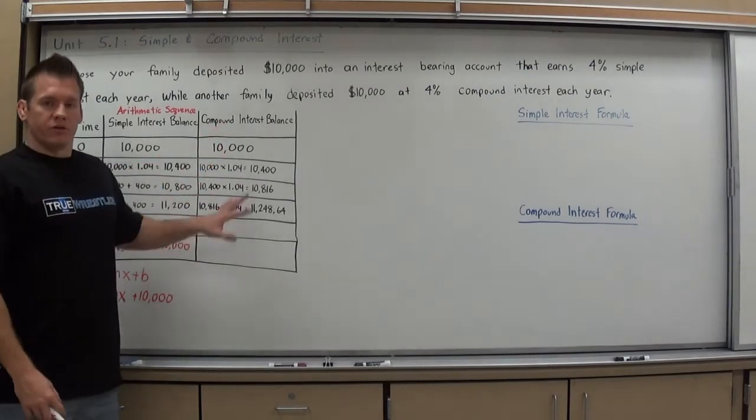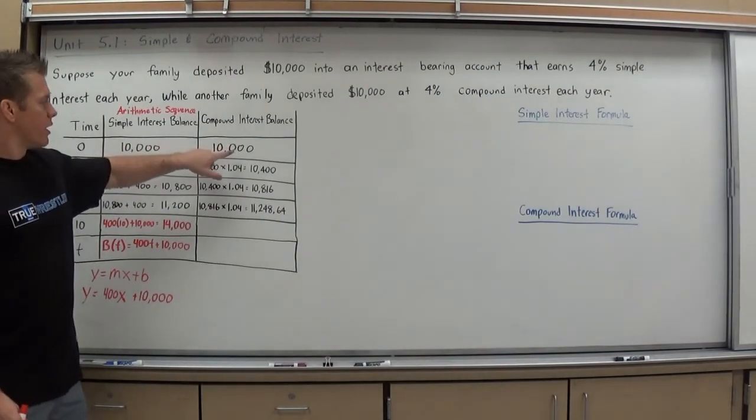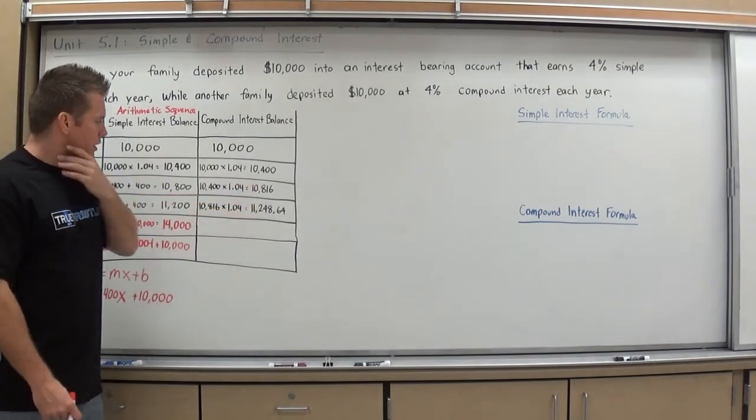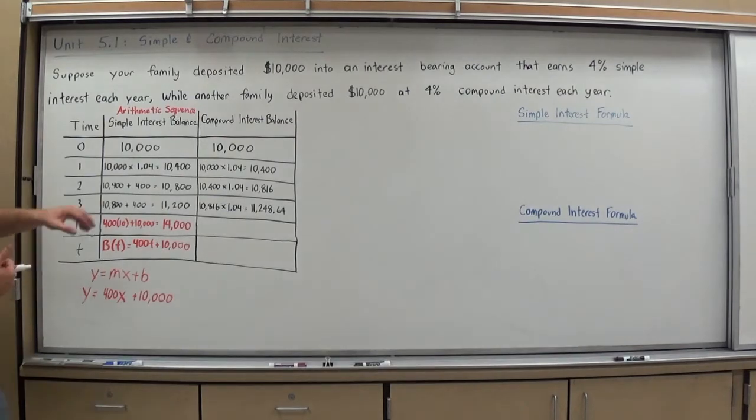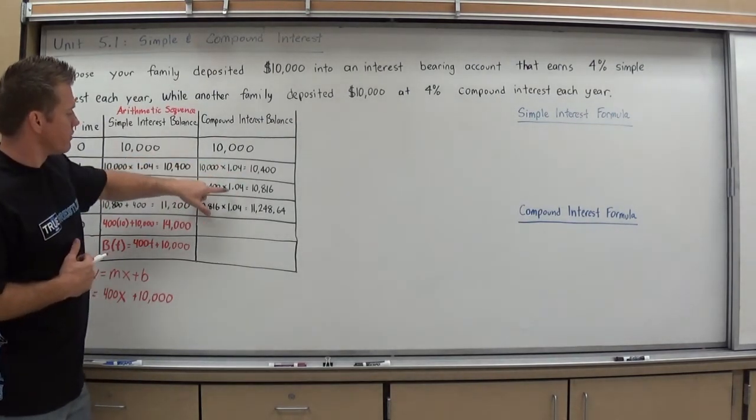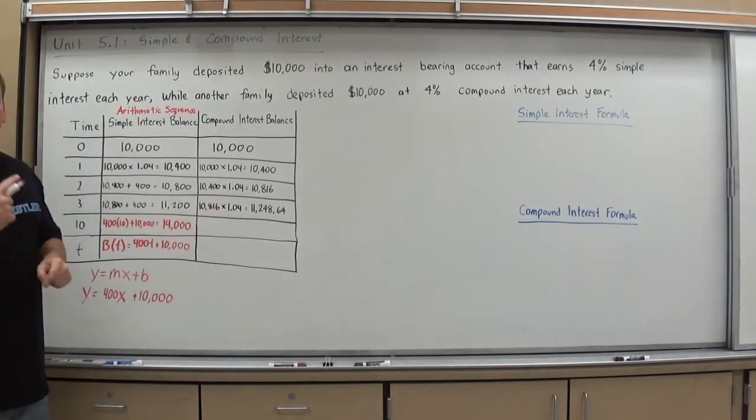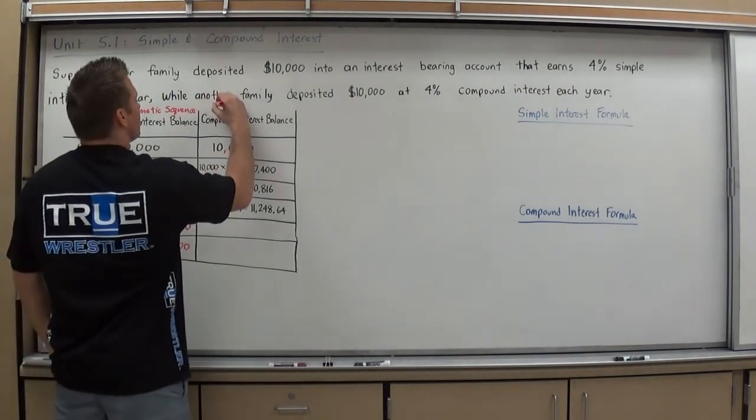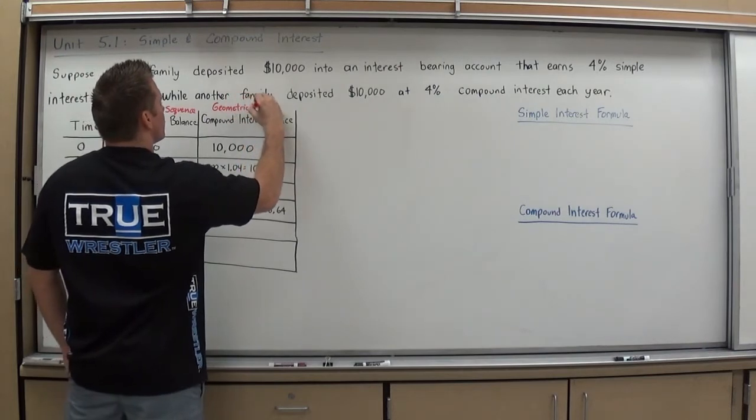Now, looking at compound interest, because it's definitely working differently. Let's again look at the balances. It went up by 400, then went up by 416, then went up by who knows. But I see a commonality here. Every single time, they're taking the previous answer times 1.04. We're constantly multiplying by the same number. If we think back again to chapter 4, when you're constantly multiplying by the same number, you have a geometric sequence.